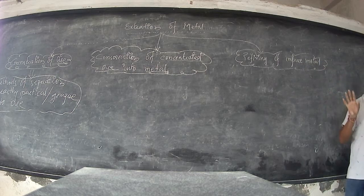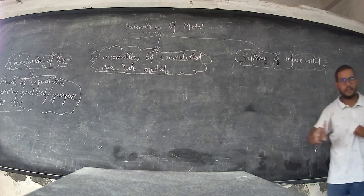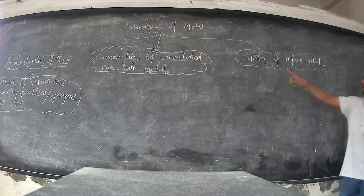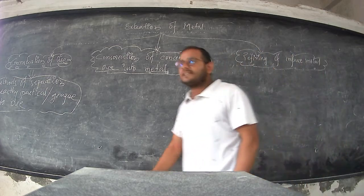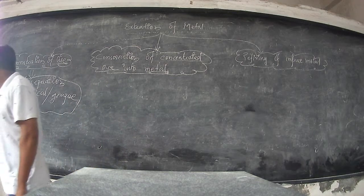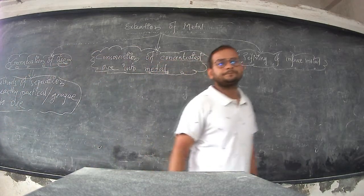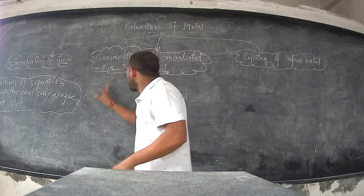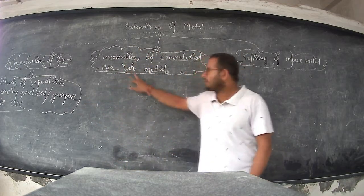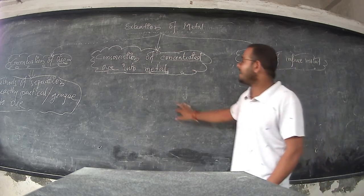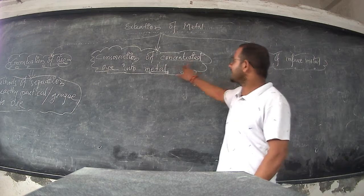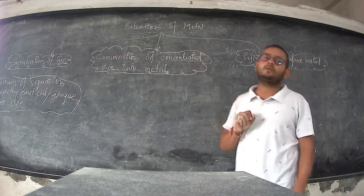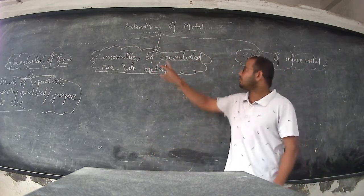This is the step: extraction, concentration of ore, conversion of concentrated ore into metal, and refining. In the reactivity series, there are three types of metals: highly reactive, medium reactive, and less reactive.